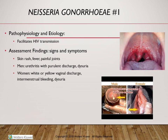Gonorrhea is the second most frequently reported sexually communicable infection in the United States, with incidence particularly high in the age group between 15 and 24. Again, most women will be asymptomatic, which contributes to spreading the disease. The condition is caused by the bacterium Neisseria gonorrhoeae, which can be transmitted through sexual contact both heterosexually and homosexually. The infection may affect the urethra, vagina, rectum, or pharynx depending on the type of sexual contact, and from that point the bacteria can spread throughout the entire body.